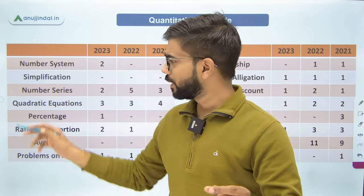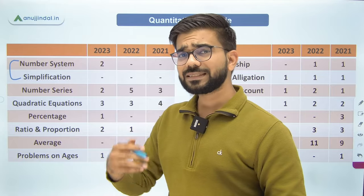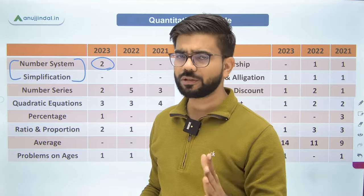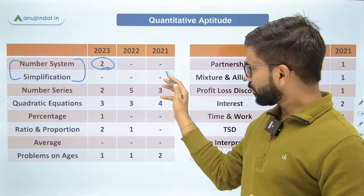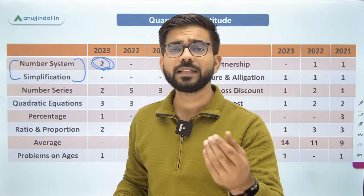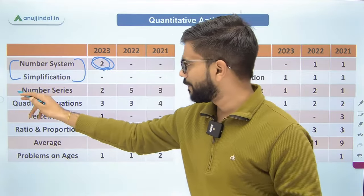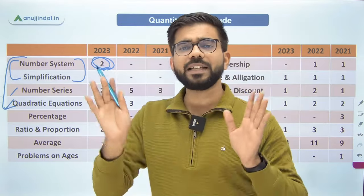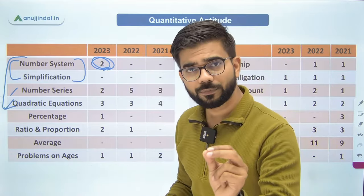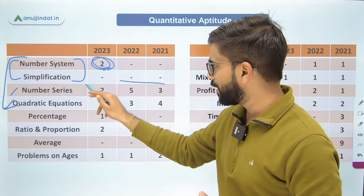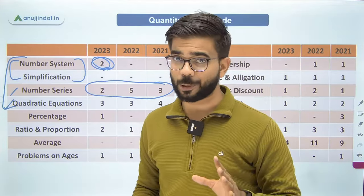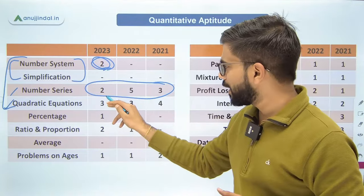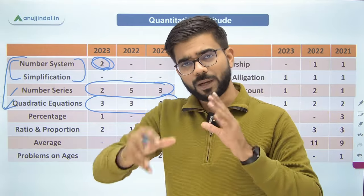The entire syllabus of Quant has 16 topics. Starting with number system and simplification — these are introductory topics, and direct questions from them are not asked very frequently, though in 2023 two questions were asked. They build your basic foundation. Then you have number series and quadratic equations, which come under the category of speed maths. Number series is very important — you can expect questions every year, though the questions are complex, have multiple statements, and are time-consuming. Quadratic equations are also very commonly asked, and the questions are quite tricky.